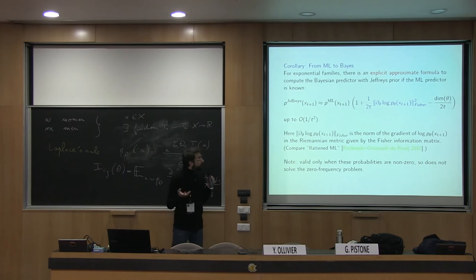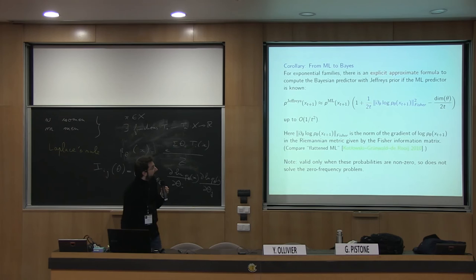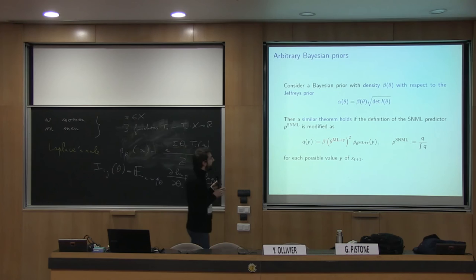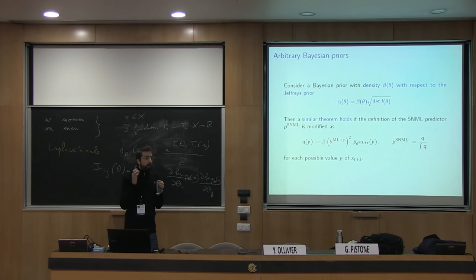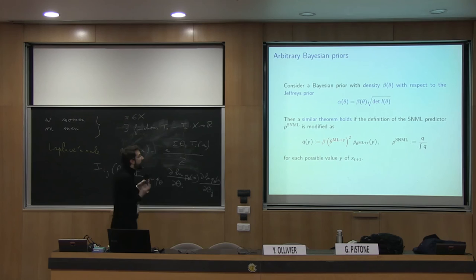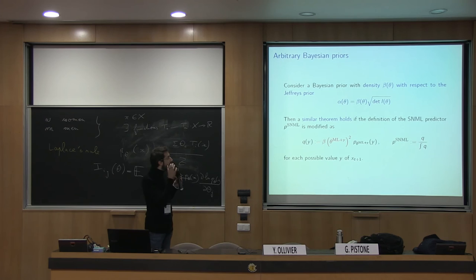We can handle arbitrary priors if we modify the definition of P_SNML to incorporate the square of the density of the prior with respect to the Jeffreys universal prior. The Jeffreys prior really plays a central role: if you want to approximate Bayesian predictors, you get something very simple when approximating the Jeffreys prior. If you want to approximate another prior, you have to incorporate the square of the density of your prior with respect to the universal prior.